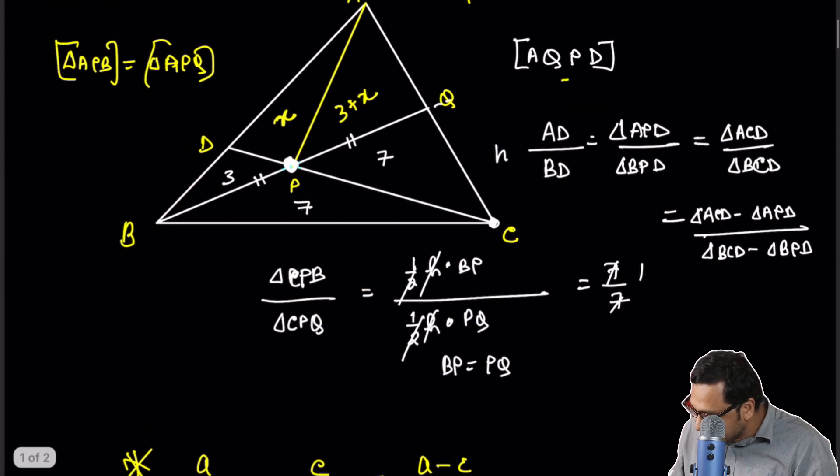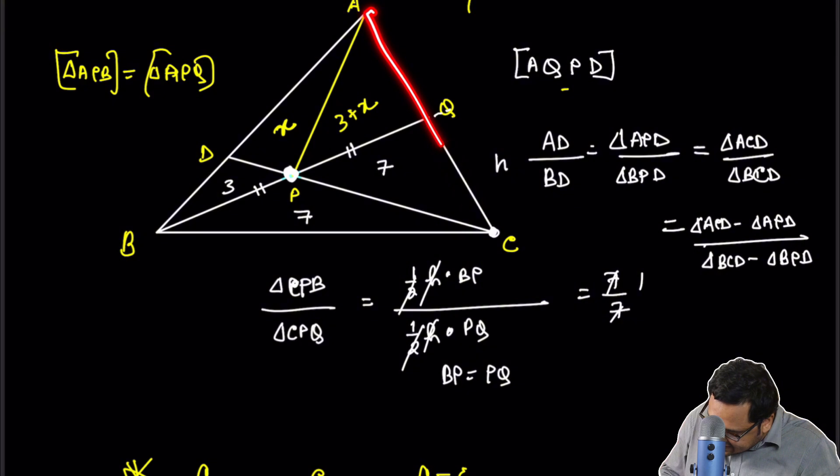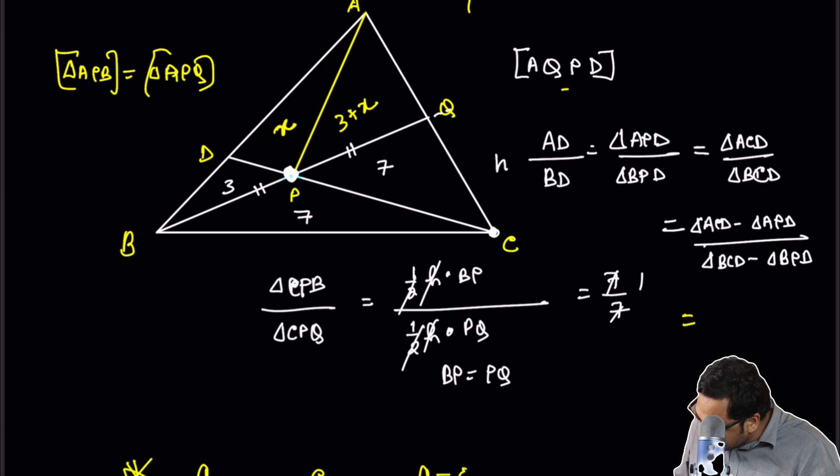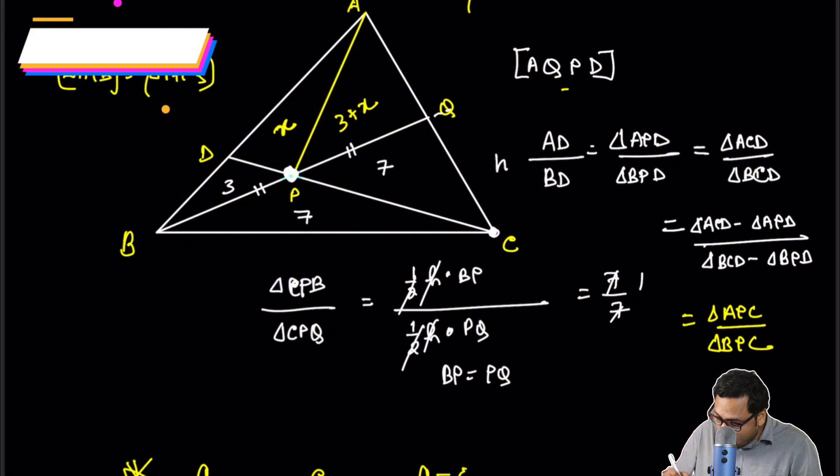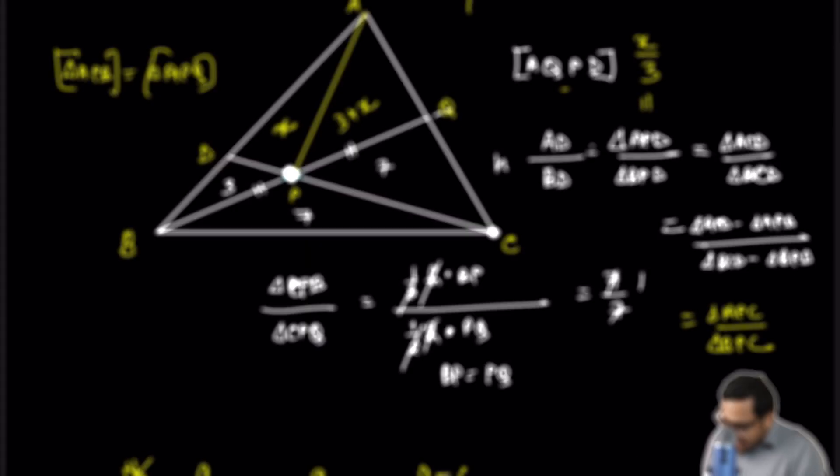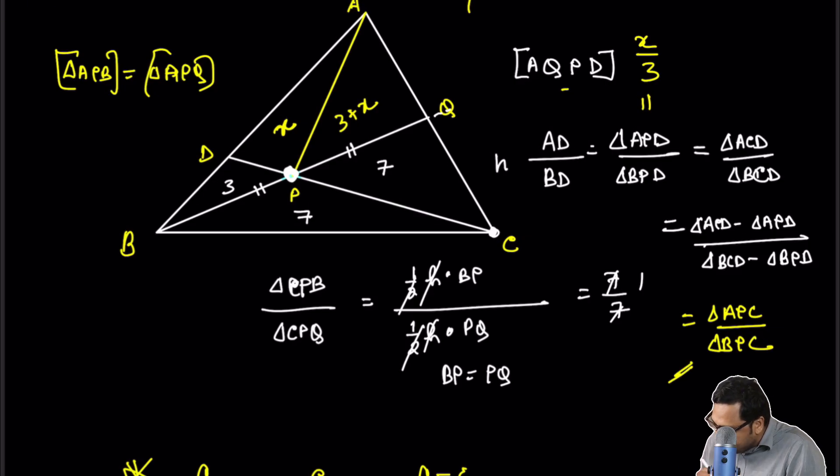So what is ACD minus APD? ACD minus APD is simply APC is equal to triangle APC and divided by triangle BPC. So what is APD by BPD? We know that it is APD by BPD is X by 3. And we know that APC by BPC. APC is 10 plus X. BPC is 7.